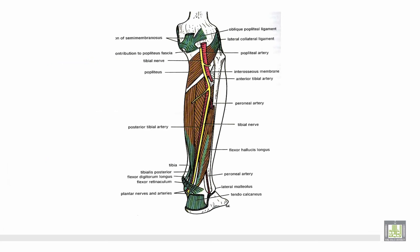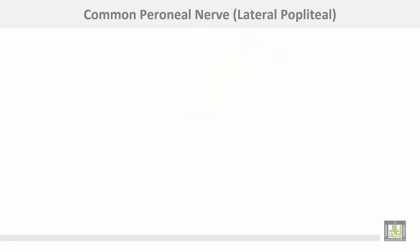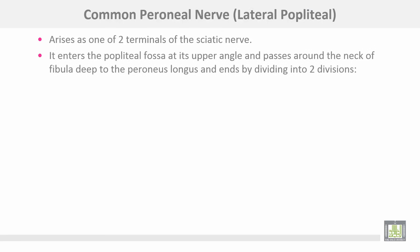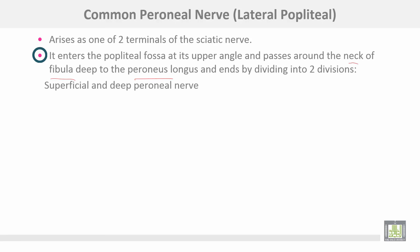This is the tibial nerve, one of the two terminals of the sciatic, which changes name at the lower border of the popliteus to become the posterior tibial nerve. The common peroneal nerve, sometimes called the lateral popliteal, arises as the other terminal of the sciatic nerve. It enters the popliteal fossa at the upper angle and passes around the neck of the fibula, deep to the peroneus longus muscle, ending by dividing into superficial and deep peroneal nerves.